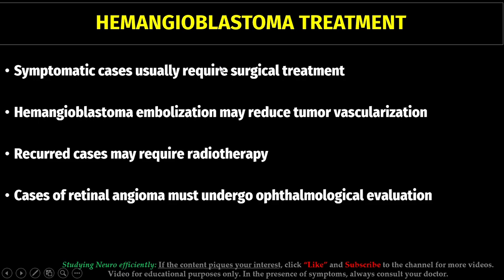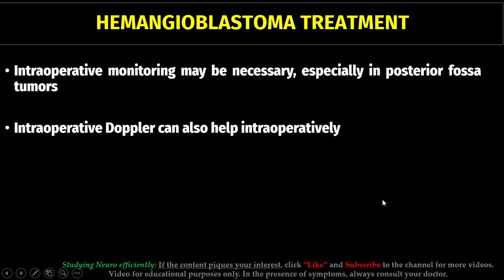How do we treat hemangioblastoma? Symptomatic cases usually require surgical treatment. Embolization may reduce tumor vascularization and can help in treatment. Recurrent cases may require radiotherapy. In cases of retinal angioma, ophthalmological evaluation is necessary. Intraoperative monitoring may be needed, especially for posterior fossa tumors, and intraoperative Doppler can also help given the high degree of vascularization.